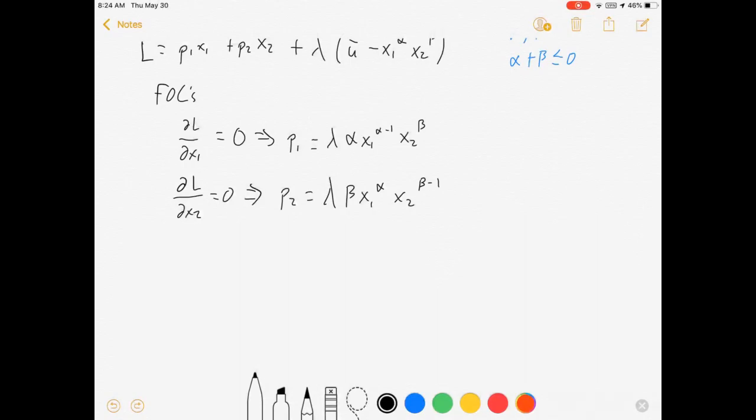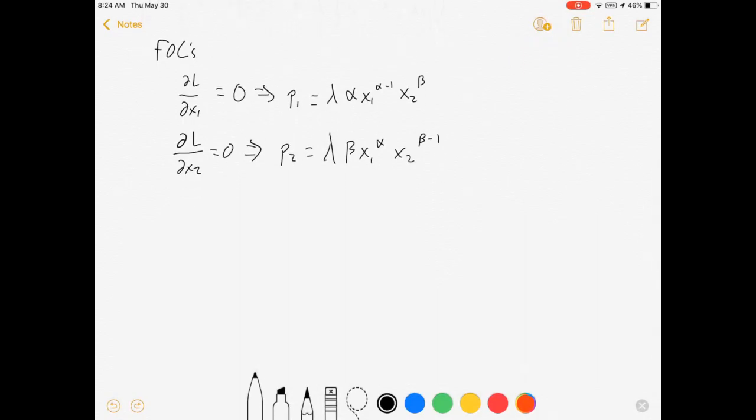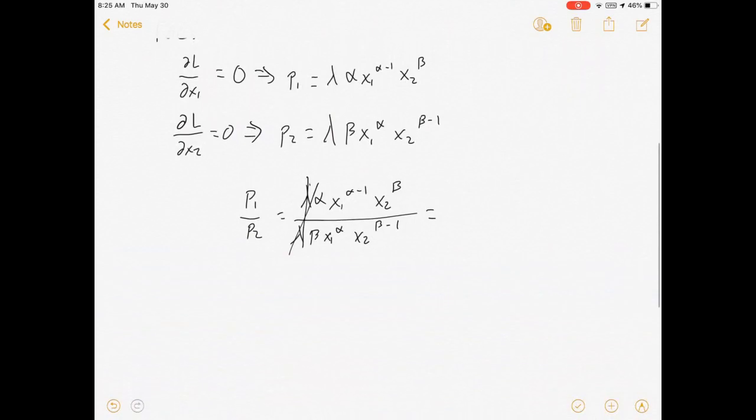We're going to set that equal to 0. So our next step is to combine these two first order conditions into one equation. And the way I'm going to do that is by taking the ratio of them. So P1 over P2 equals lambda alpha x1 to the alpha minus 1 x2 to the beta over lambda beta x1 to the alpha x2 to the beta minus 1. If I do that, the lambdas are going to cancel out, and I'm going to be left with alpha x2 over beta x1.